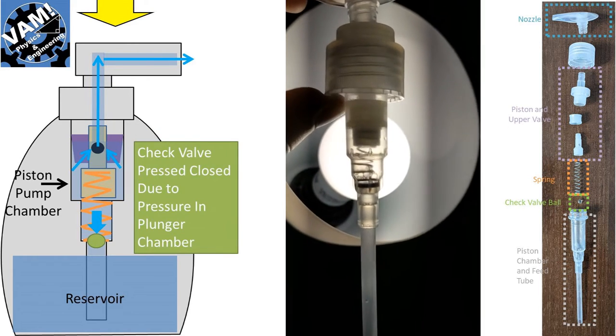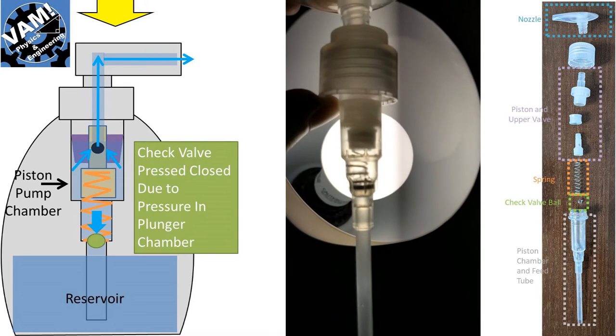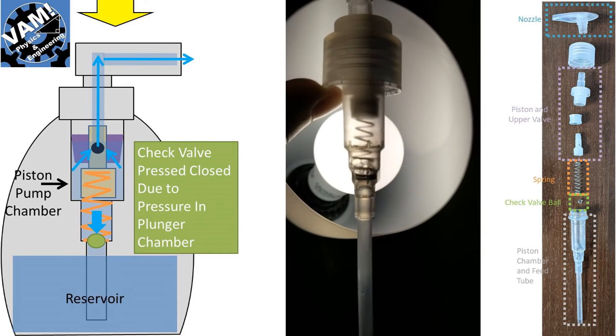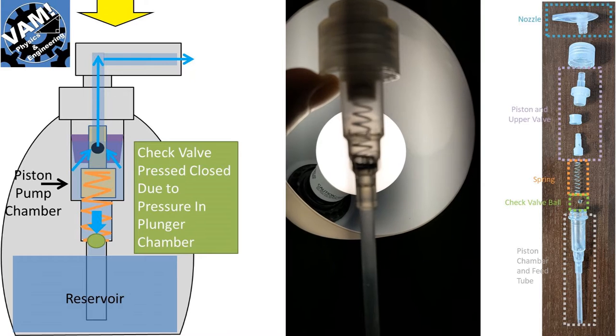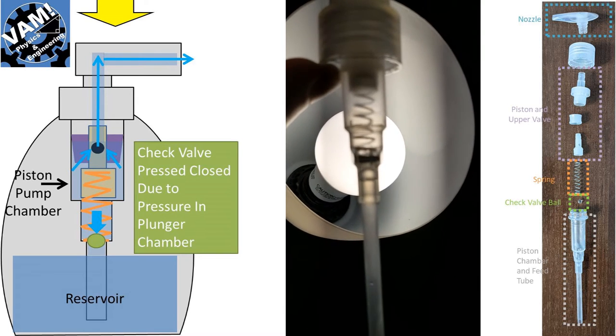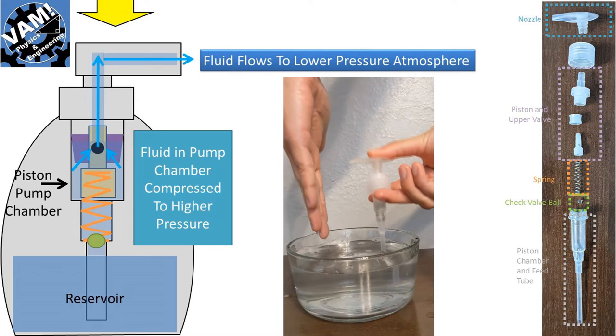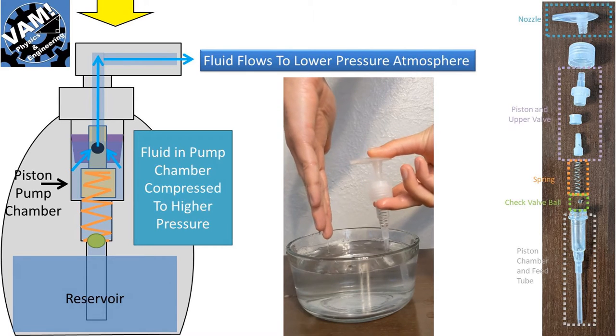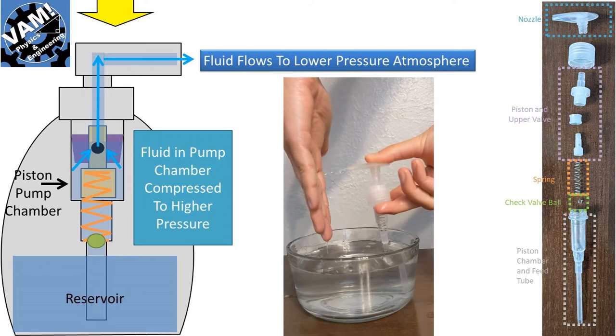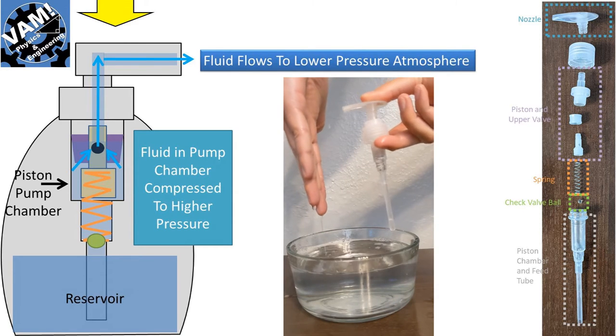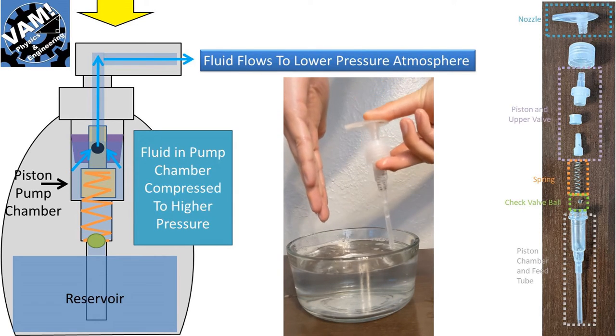There is a check valve that is basically a ball at the bottom of the piston chamber. The pressure in the fluid when the plunger is being compressed causes it to be forced down and remain closed. The purple piston compresses the fluid which causes the fluid to want to go to an area of lower pressure and therefore goes through the top nozzle of the soap dispenser and into the atmosphere.